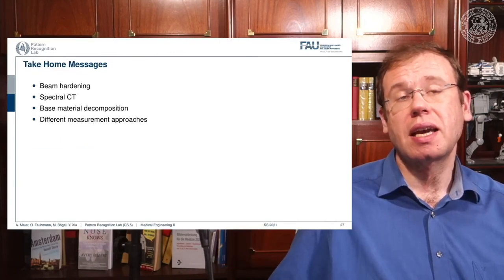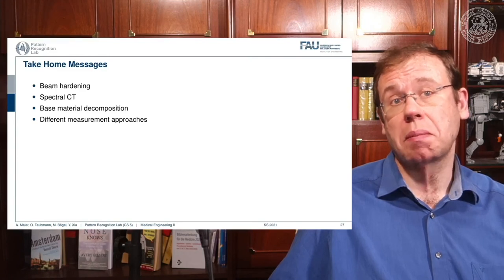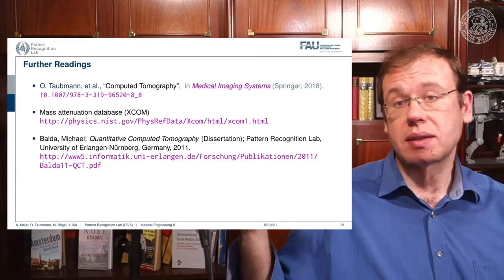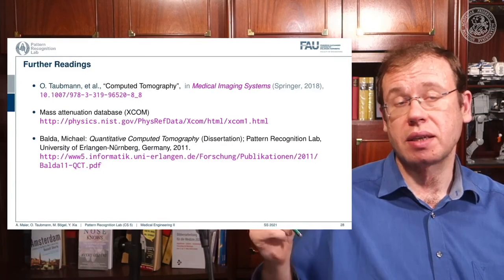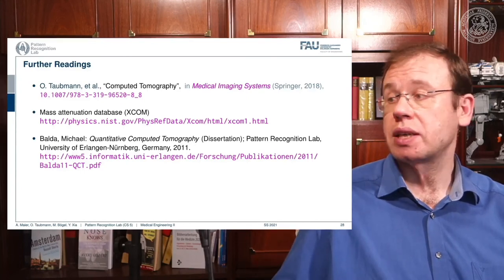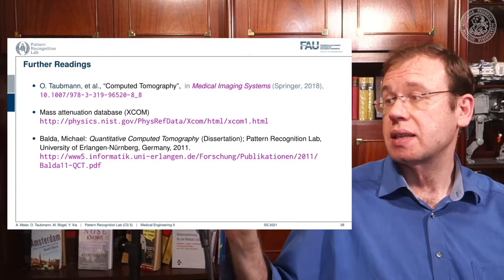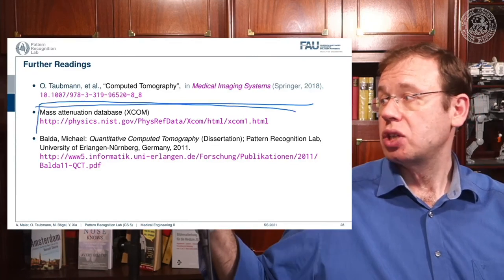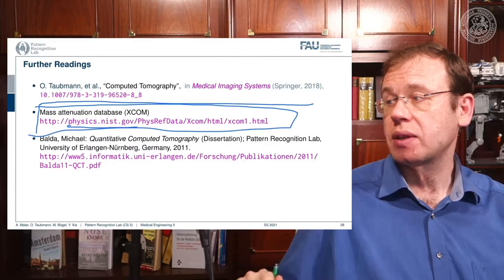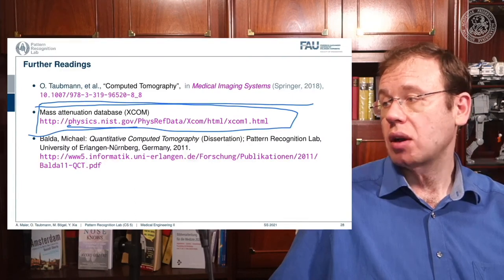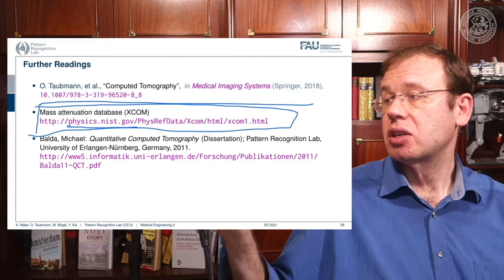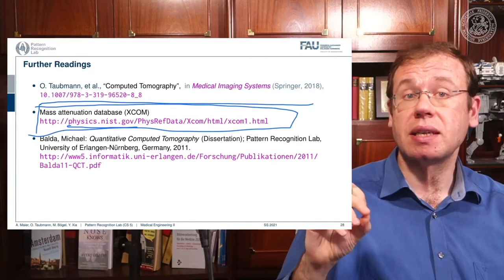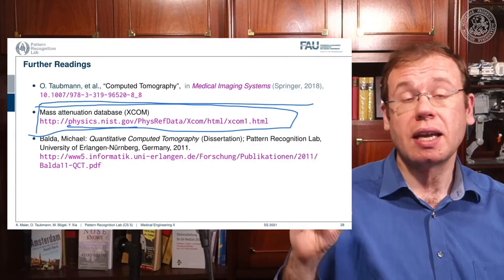To summarize the take-home messages: we explained beam hardening and spectral CT today, found out how to pursue basis material decomposition, and looked at the different measurement approaches. For further reading, the papers referenced in the slides are recommended, as well as the book chapter by Oliver Taubman. Particularly important is the mass attenuation database from the National Institute of Standards and Technology, which has reference values for all elements and frequent compounds — downloadable for free — that you can supply to your simulation.